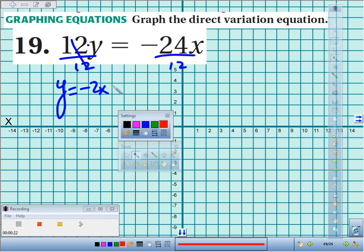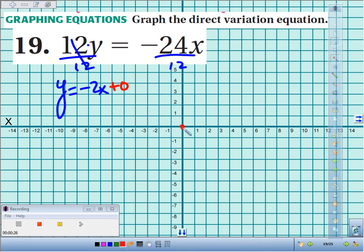Direct variation equations have a y-intercept of zero, so we begin by plotting a point at the origin.